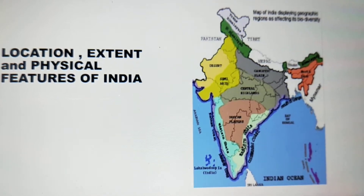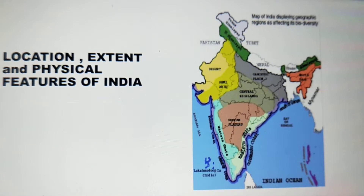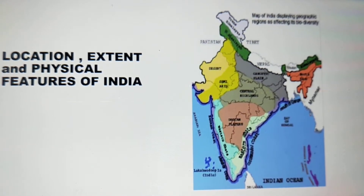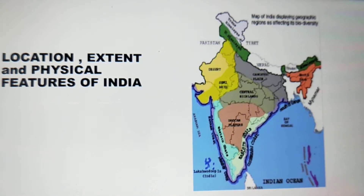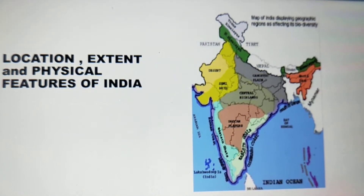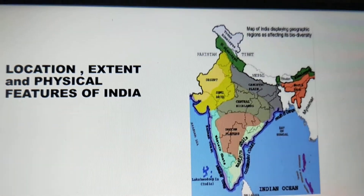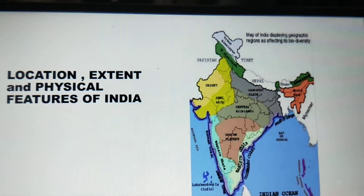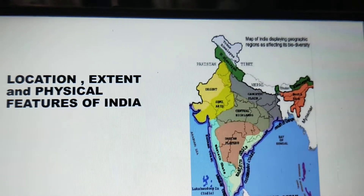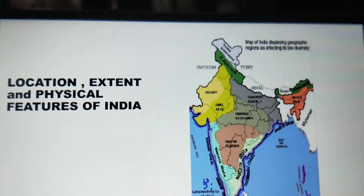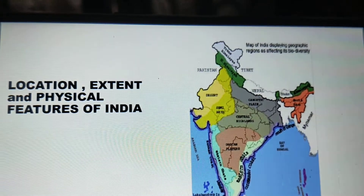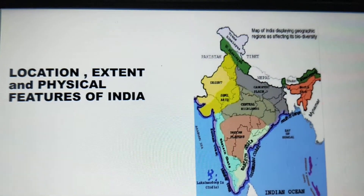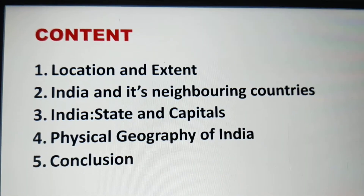Good morning students. I hope you are having a great week. Welcome to Geography class. As you can see on the screen, what we are going to talk about in today's video is location, extent and physical features of India. As we all know, India is a land of unity in diversity — a collection of lands and climates, of diverse races and creeds, of languages, religions and of contrasts. With all its physical dimensions and characteristics, it is truly a continent.